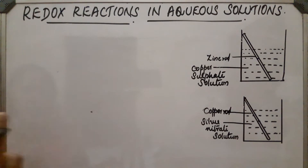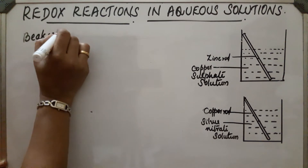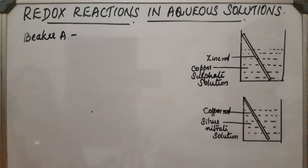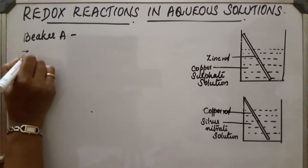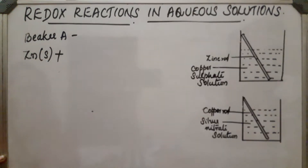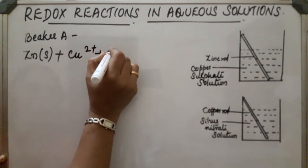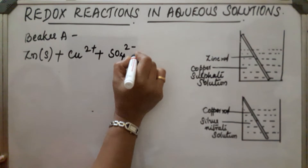Notice the two experiments after a few minutes. In beaker A, the zinc rod is partially dissolved in the aqueous solution and copper gets deposited on the zinc rod. This is due to the reaction: zinc solid plus copper sulfate, which ionizes into Cu²⁺ and SO₄²⁻ ions.